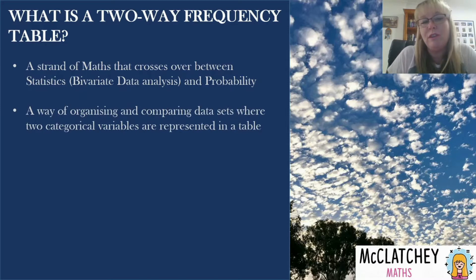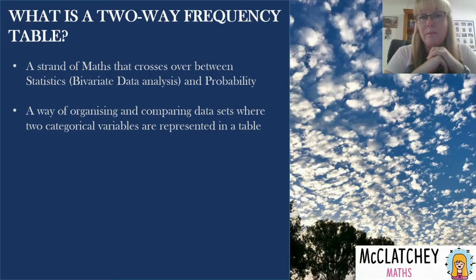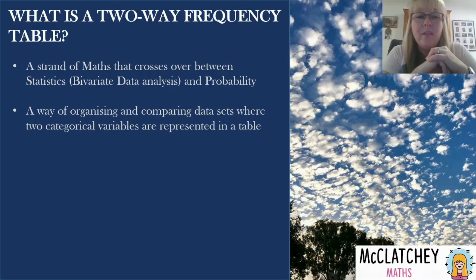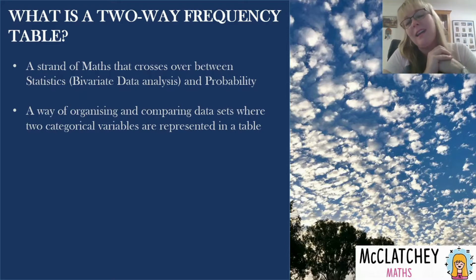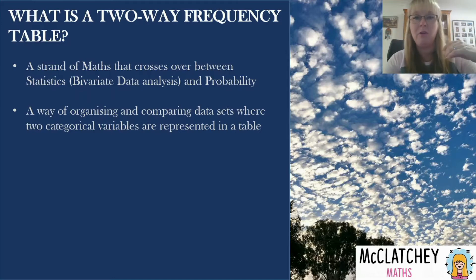A two-way frequency table is a way of organizing and comparing two different data sets where you've got two different categorical variables. There are two types of variables: categorical and numerical. If I asked you a question in a survey, your answer could be a word or a number. For example, 'What is your favorite TV show?' gives a word answer like Stranger Things, whereas 'How many siblings do you have?' gives a number. Categorical data versus numerical data — for two-way frequency tables we are using categorical variables only.